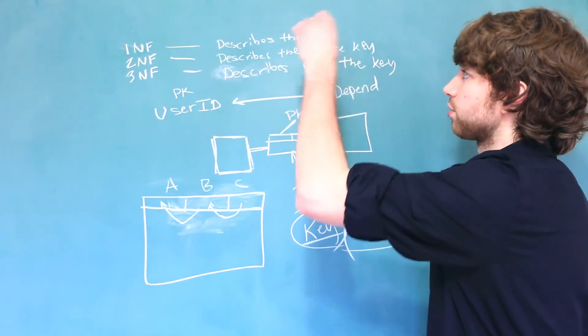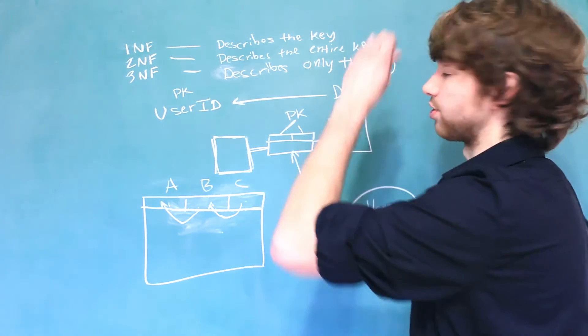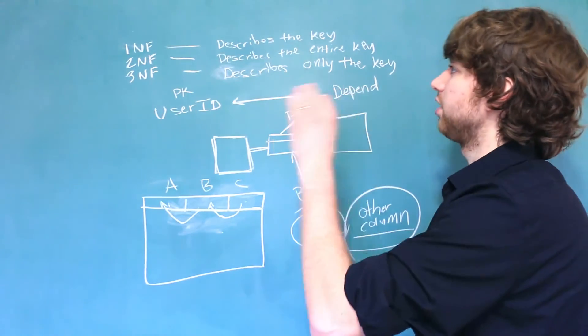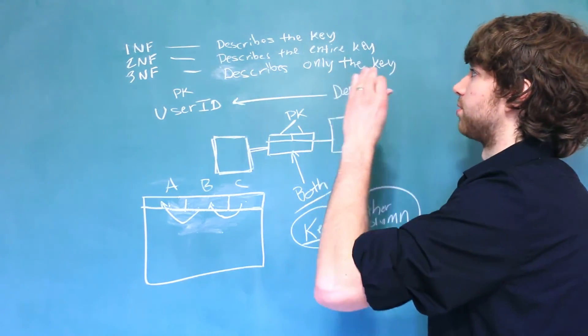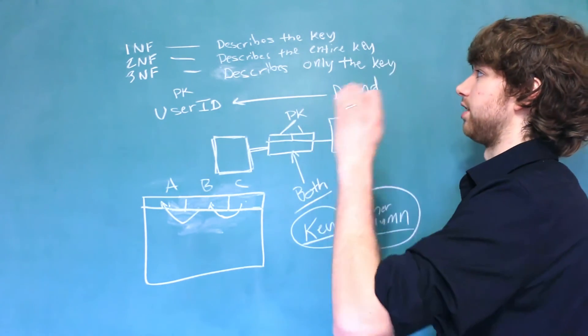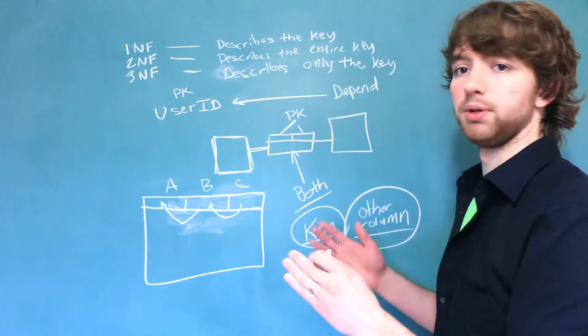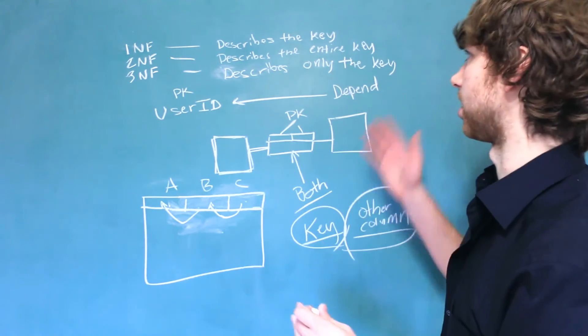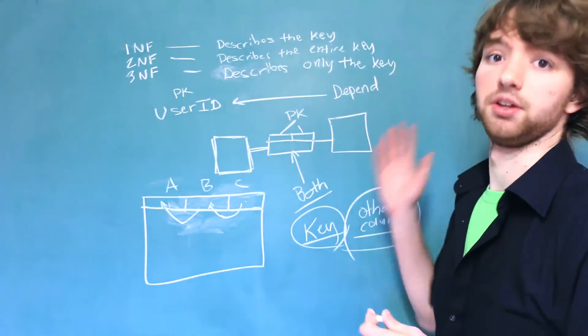So, to summarize, first normal form, every column has to describe the key singularly. Second normal form, every column describes the entire key. And third normal form, everything describes only the key. Or some people say nothing but the key. So, they'll say the key, the whole key, and nothing but the key.